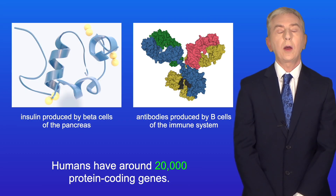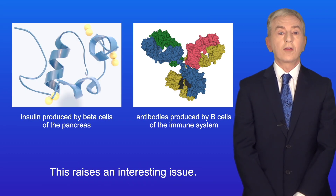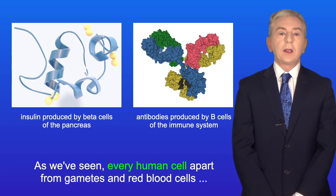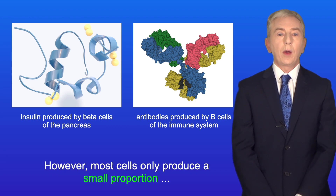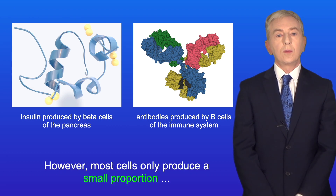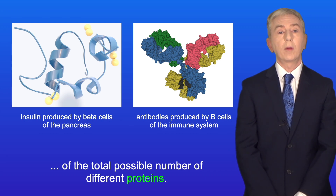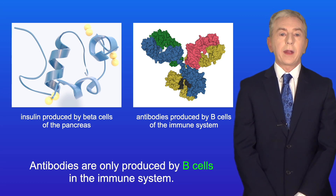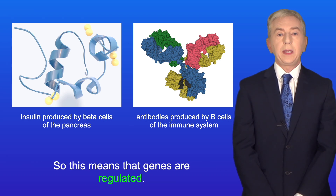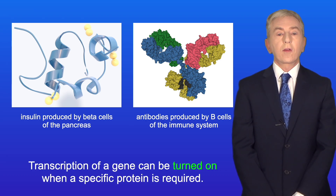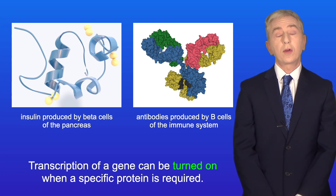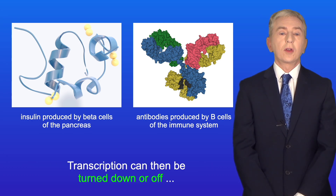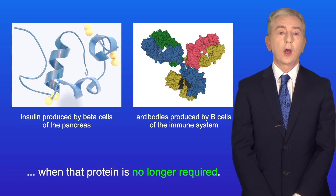Humans have around 20,000 protein-coding genes, and this raises an interesting issue. Every human cell, apart from gametes and red blood cells, contains all of the human genes. However, most cells only produce a small proportion of the total possible number of different proteins. For example, insulin is only produced in the beta cells of the pancreas, and antibodies are only produced by B cells in the immune system. So this means that genes are regulated — transcription of a gene can be turned on when a specific protein is required, and turned down or off when that protein is no longer required.